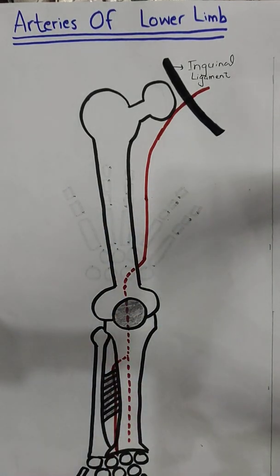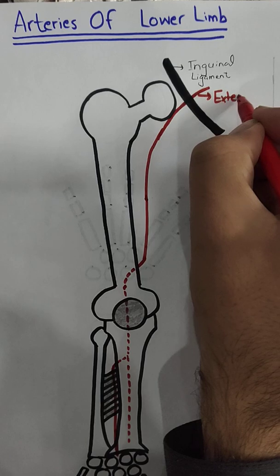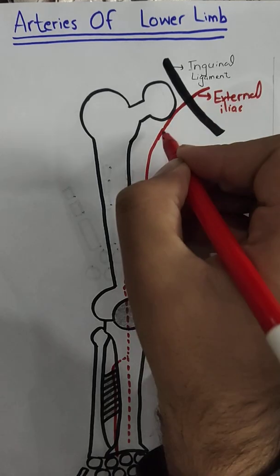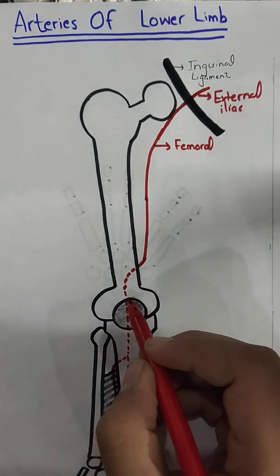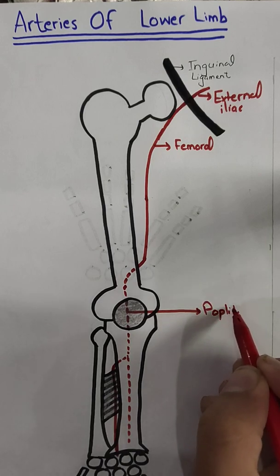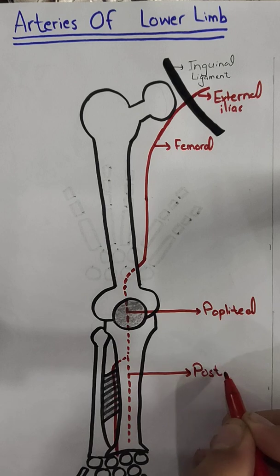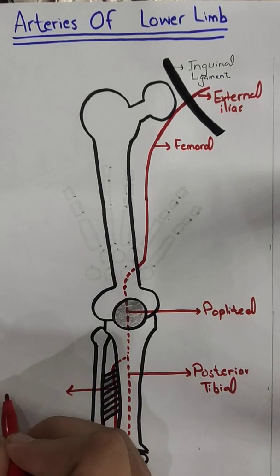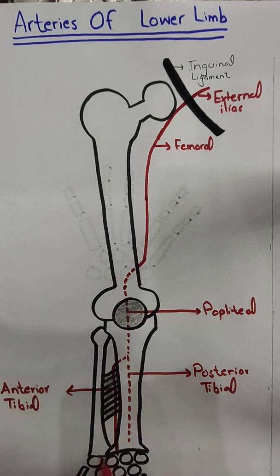Let's label these main arteries: this was the external iliac, this was the femoral, here it was the popliteal, this was the posterior tibial, this was the anterior tibial, and then it continues as the dorsalis pedis.